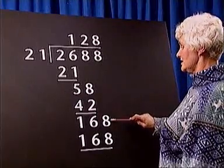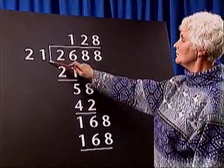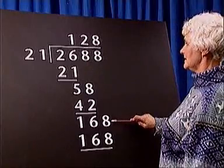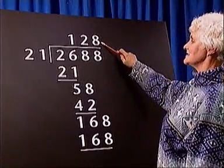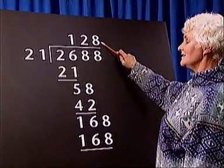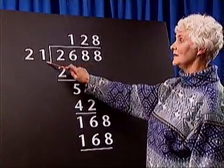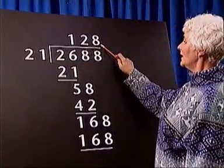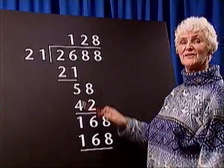We then bring down the last digit, 8. 21 goes into 168 exactly 8 times. So, our answer to 2688 divided by 21 is 128 with no remainder.